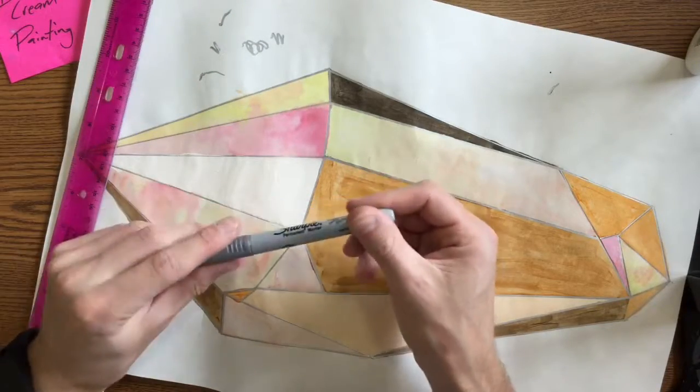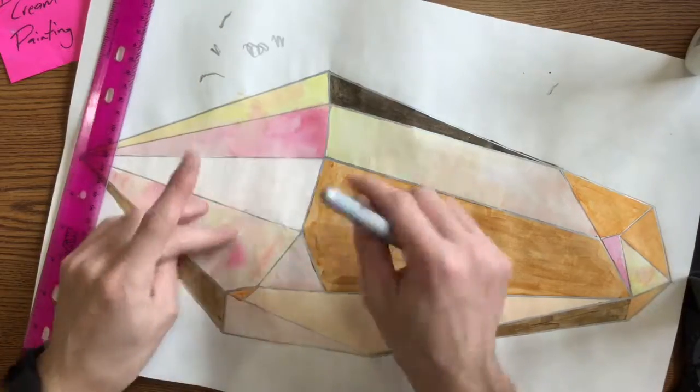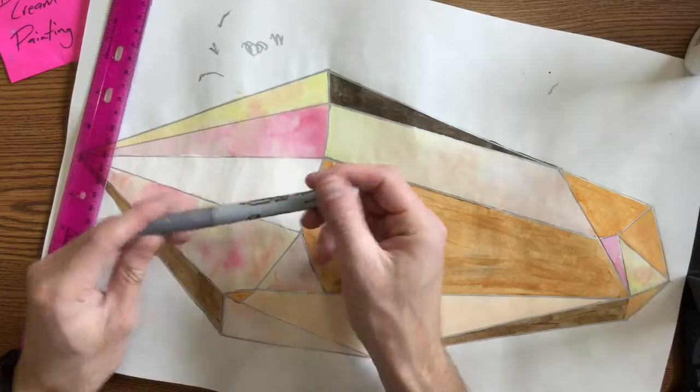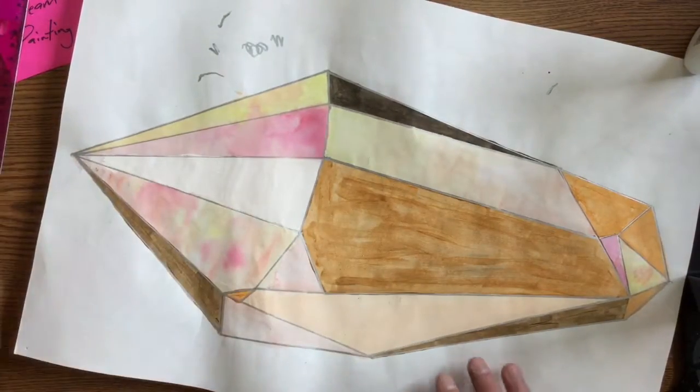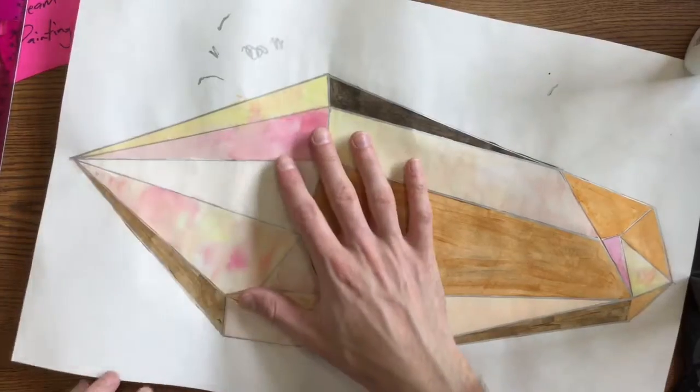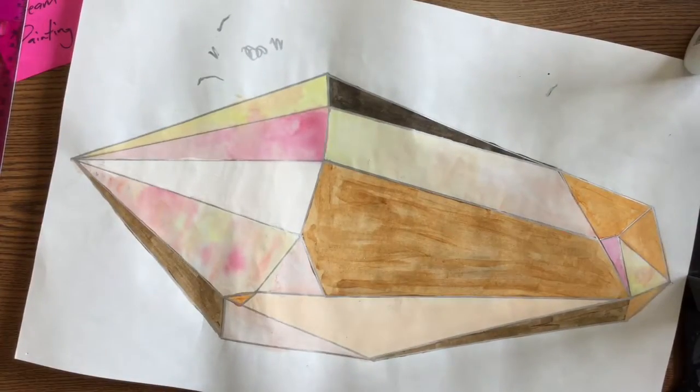If your Sharpie isn't working very well, let me know. Sometimes this paint kind of clogs up our Sharpies, so just raise your hand and give me a heads up. If you are finished doing this or you're waiting for a Sharpie, what you can do is cut out your mineral.